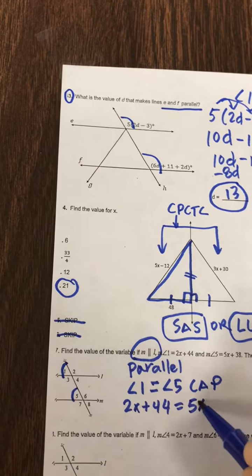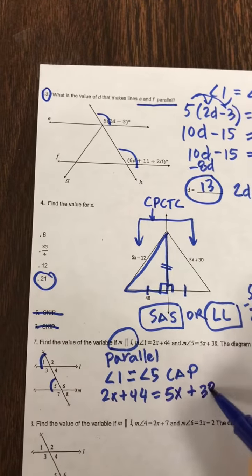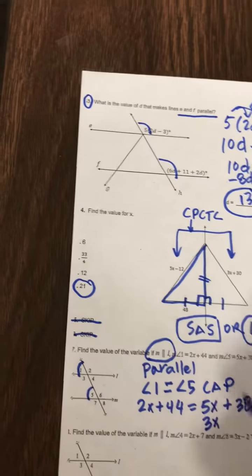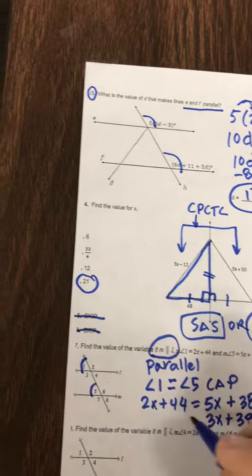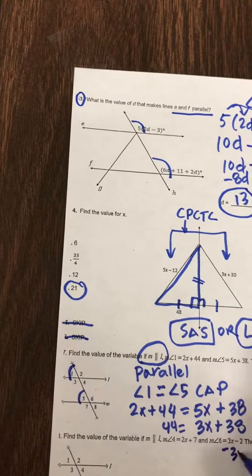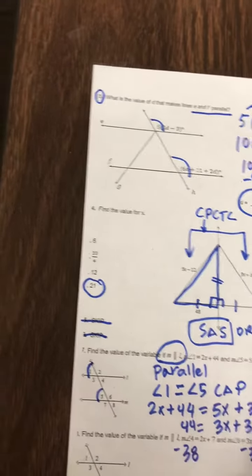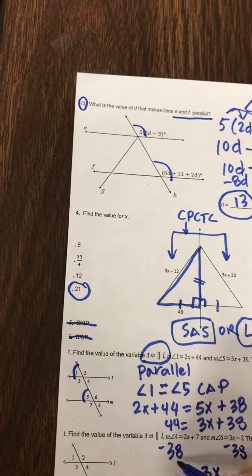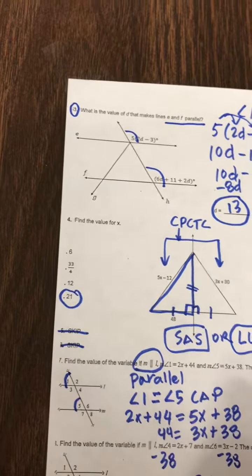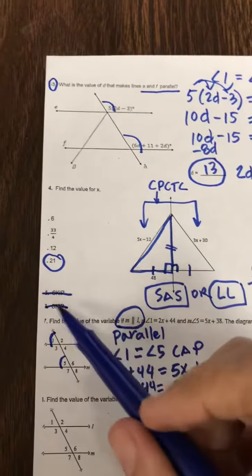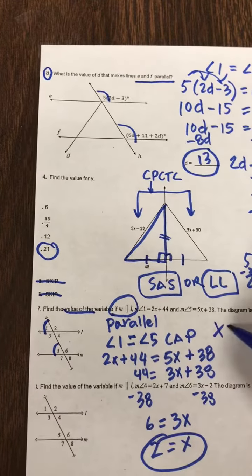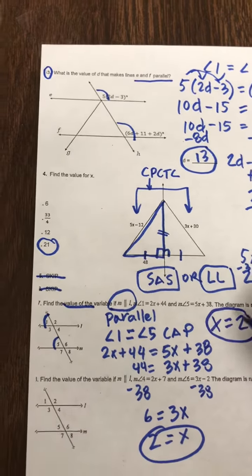These were very similar to the ones on the test. All right, so we should get 3X here if you subtract 2X on both sides. Now if I subtract 38, 6, so X here would be equal to 2. So all it's saying is, what would be the value of the variable? Well, the variable is X. So this question is asking for X, and we got X is equal to 2.